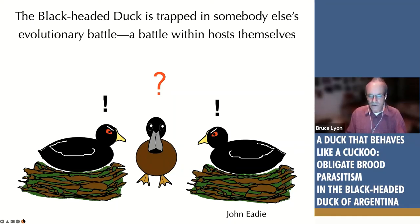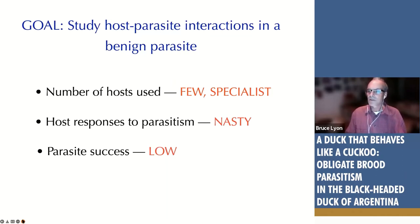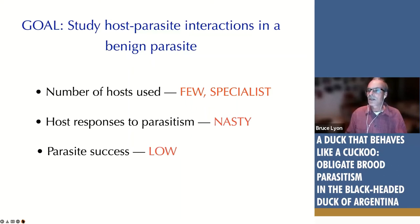Based on a variety of lines of evidence, we concluded that this duck is actually trapped in somebody else's evolutionary battle. The parasitism within the coots led to the evolution of egg recognition and rejection of coot eggs, and the duck is sometimes collateral damage. Natural selection has favored coots to recognize each other's eggs, and they target duck eggs as a result — not because of selection pressure from the ducks themselves. The poor ducks are stuck between a coot and another coot.